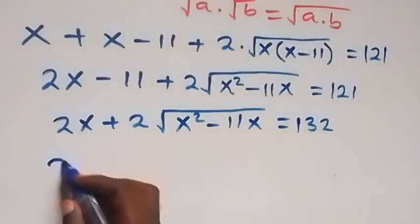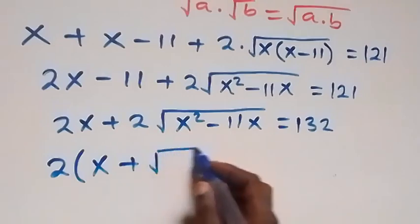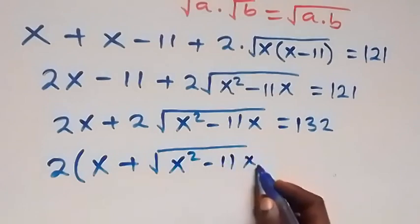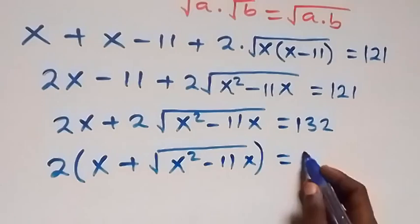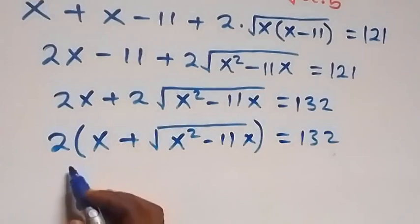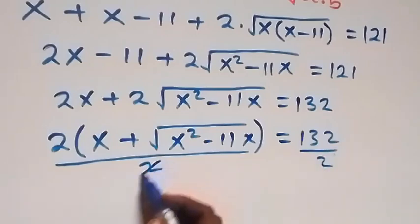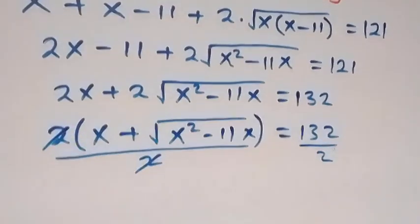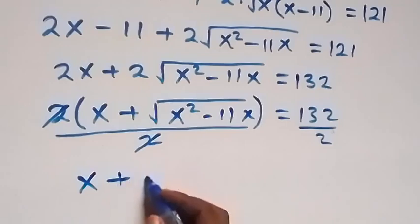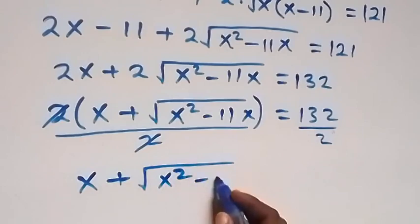From here we have 2 as a common factor, so we factor it out. We have 2 times bracket x plus square root of x squared minus 11x, close bracket, equals to 132. Then we divide both sides by 2, and the 2s cancel each other, so we are left with x plus square root of x squared minus 11x.